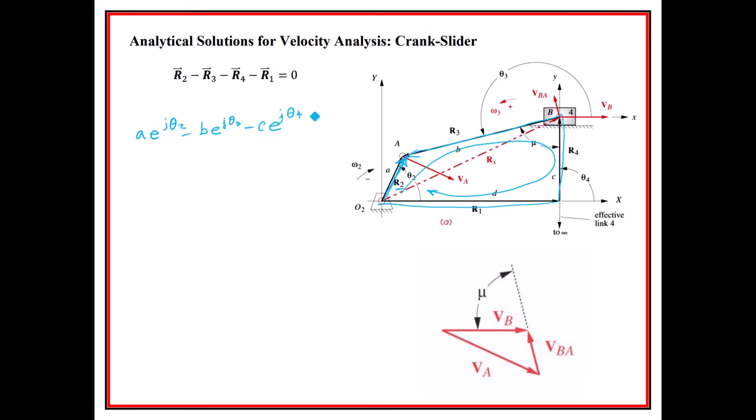And then minus d equals zero. We just assume that theta1 is equal to zero, therefore it has no coefficient in there. If we take the time derivative of it as we are used to already, we have a*omega2*j*e^(j*theta2) minus b*omega3*j*e^(j*theta3)